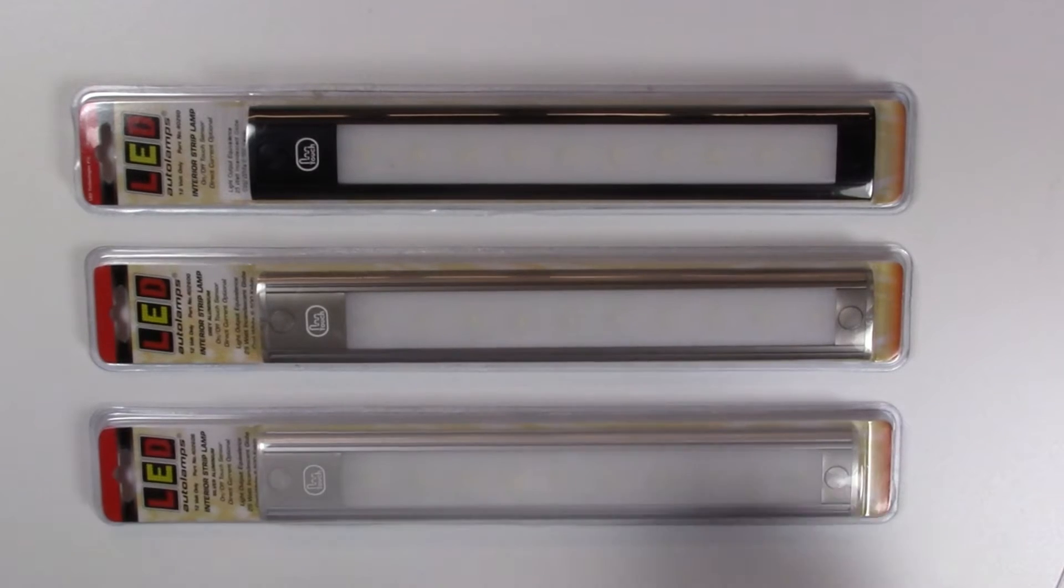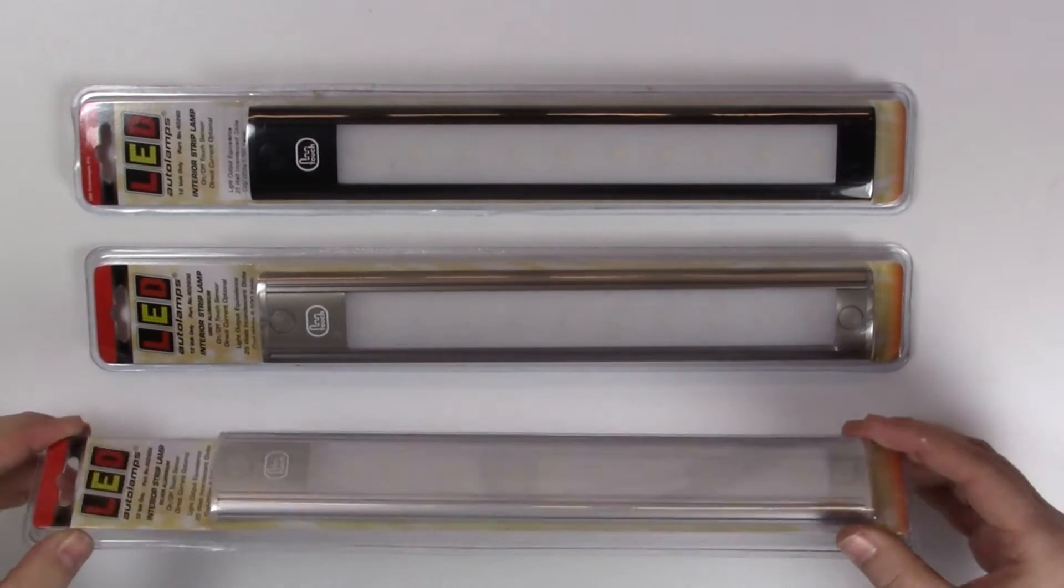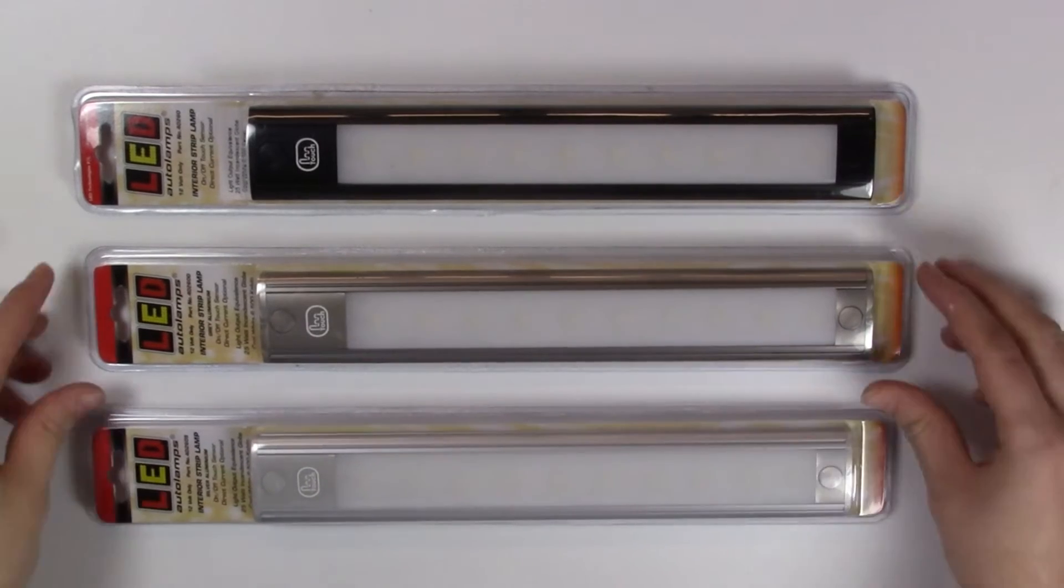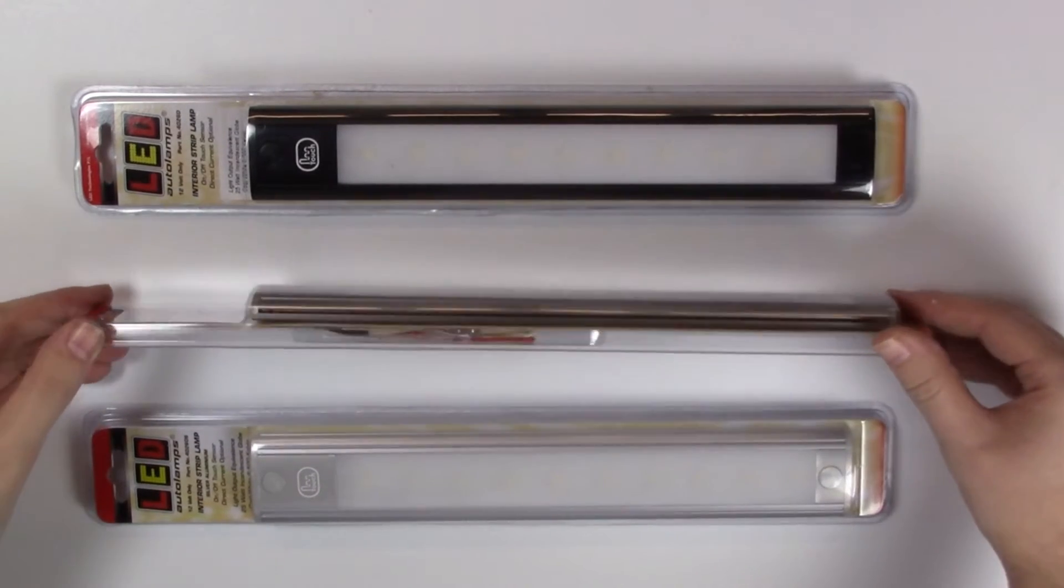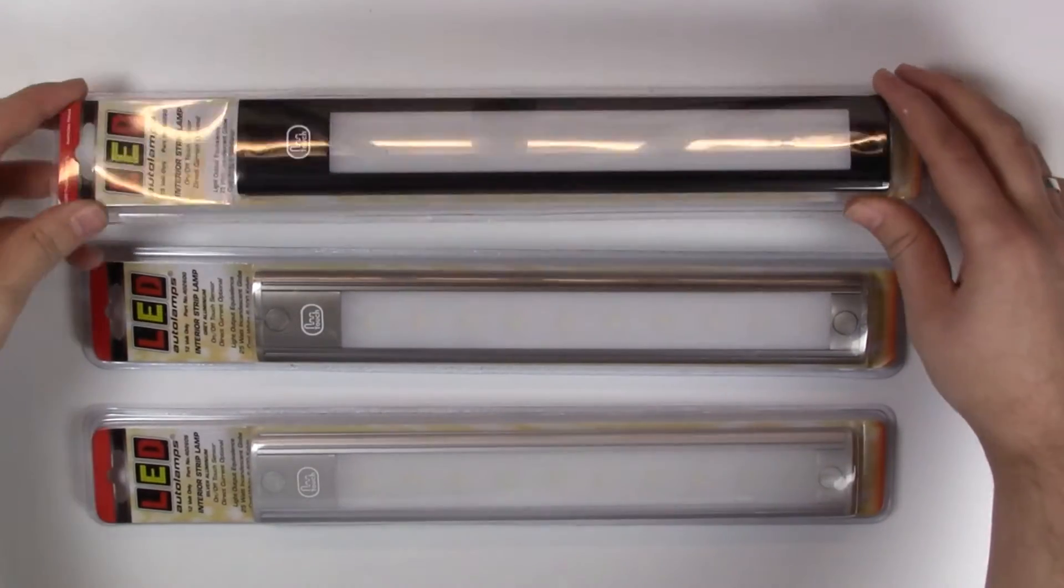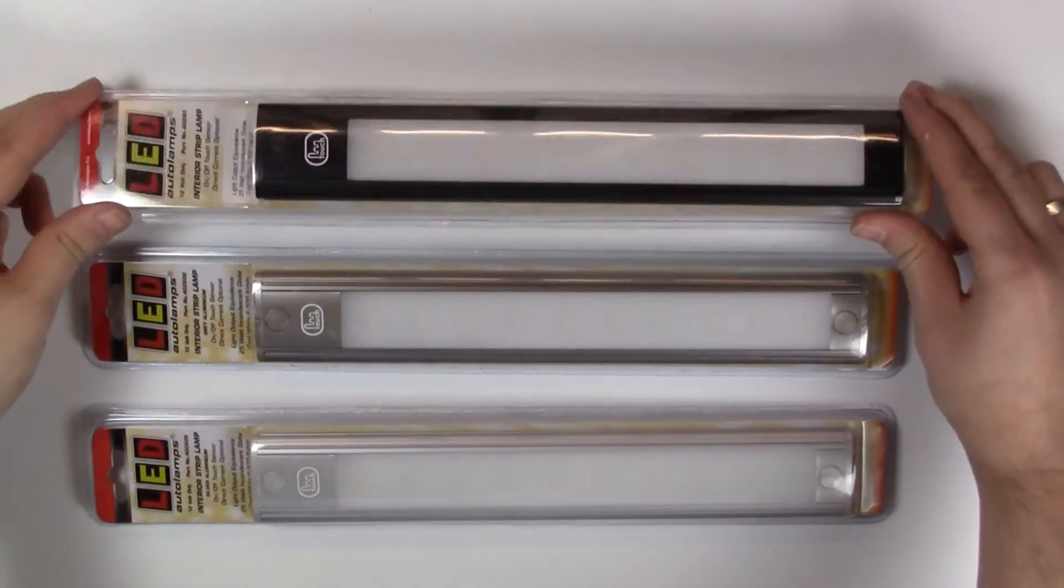These lights are perfect for fitting into areas where you're limited on space and offer a great amount of light. They come in three different colours: black, graphite grey, and silver. They also come in three different lengths: 280, 410, and 770 millimetres.